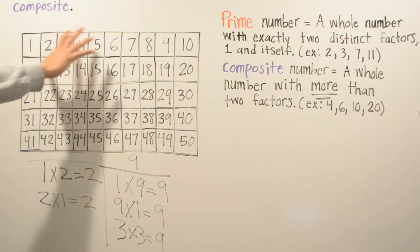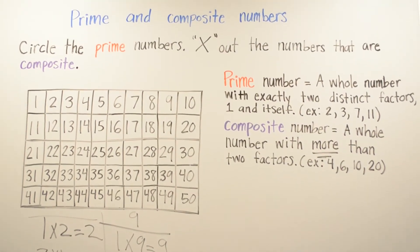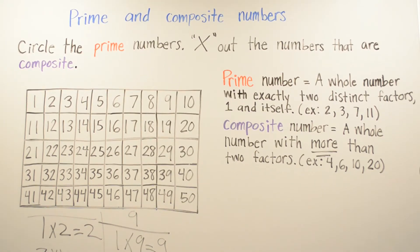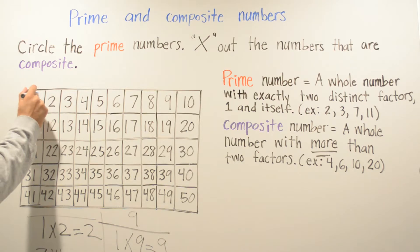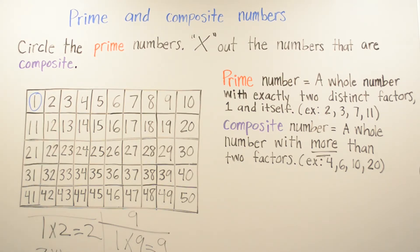We're going to start with the chart and first circle all the prime numbers, then come back and X out the composite numbers. We'll start with 1. I circled 1 in blue because 1 has only one distinct factor, which is just 1. A prime number requires exactly two distinct factors — one and itself — but for 1, it's only 1. And a composite number needs more than two factors, so 1 doesn't qualify there either. So 1 is neither prime nor composite.